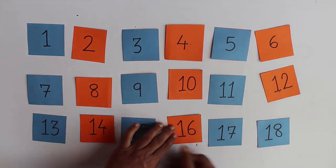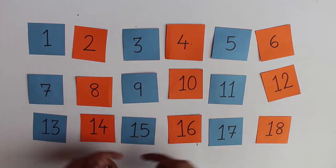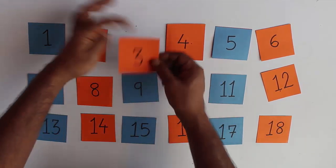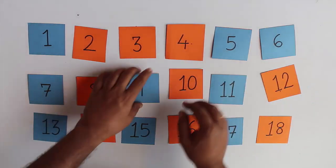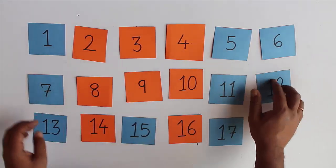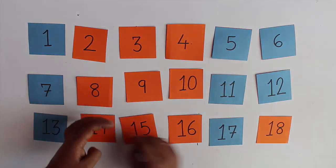16, and 18. Now we will turn every third card: 3, 6, 9, 12, 15, 18.